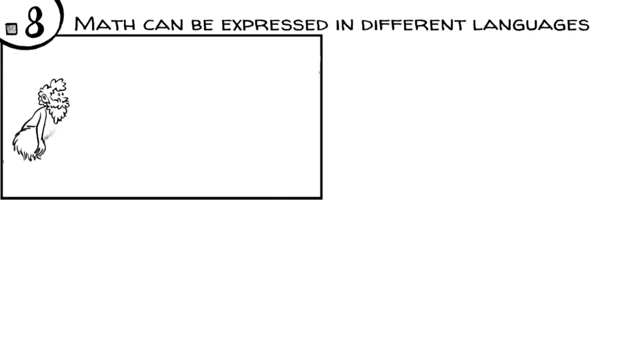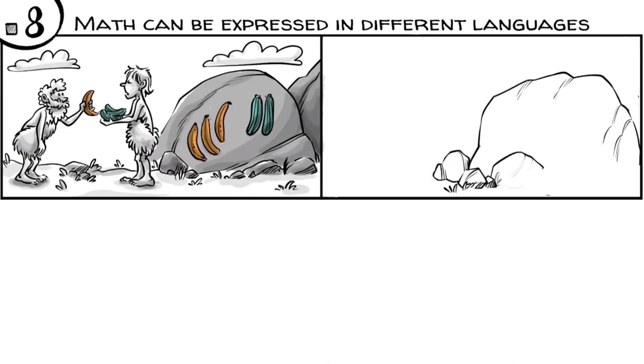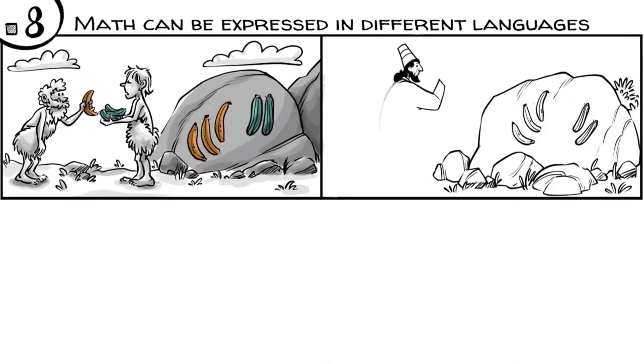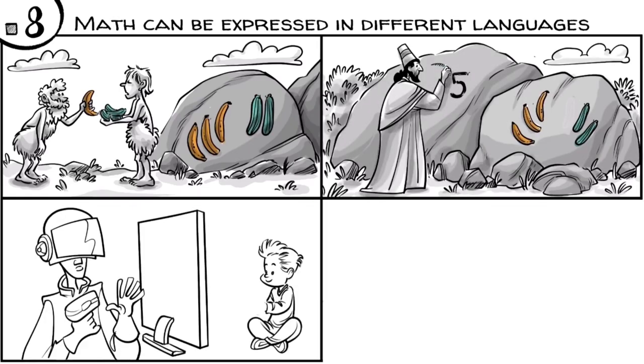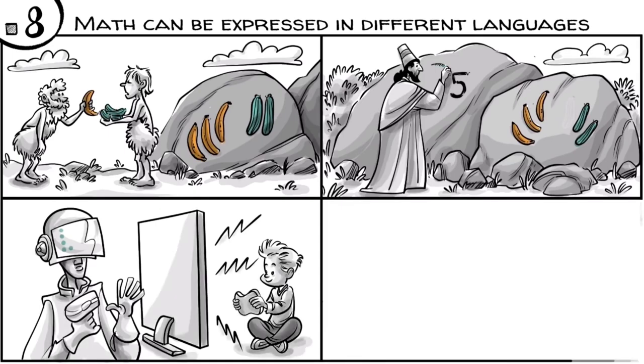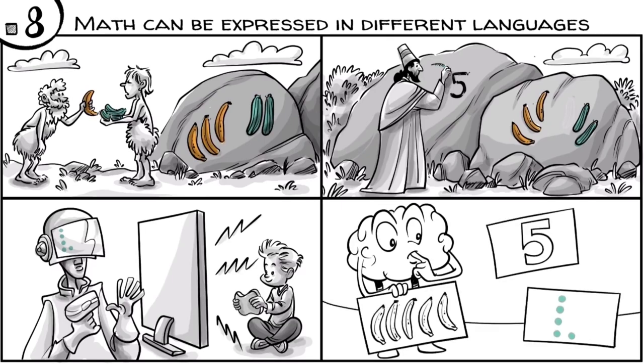Math can be expressed in different languages. A hundred thousand years ago, we used objects to express our mathematical thinking. Later, we used images. Around one thousand years ago, we began to reduce images to Arabic numeral symbols. In future, we might replace symbols with bits or express math in graphic simulations or games. In other words, while math thinking always happens in our heads, the language that represents our thinking is evolving.